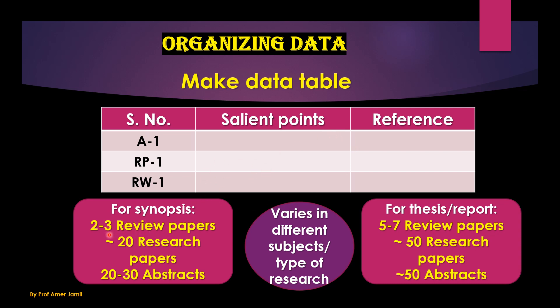For a synopsis you need about two to three review articles — there is no fixed number, it just varies with different subjects and types of research. For a thesis, research report, or research project, you can have a larger set of research resources available.